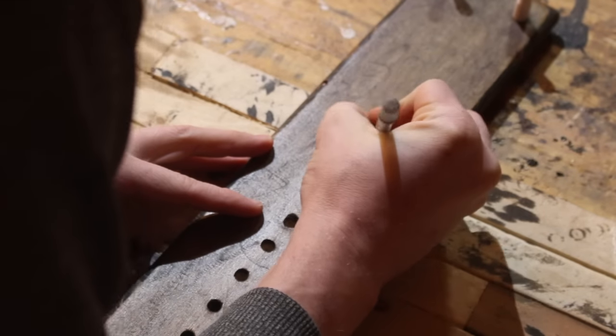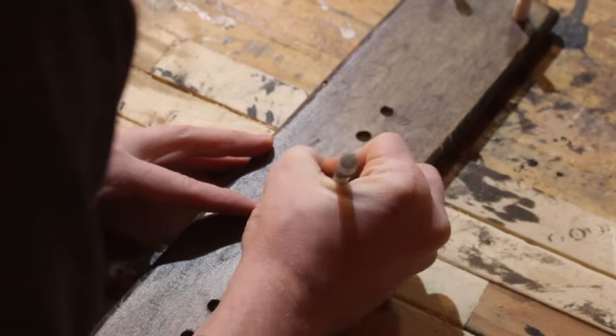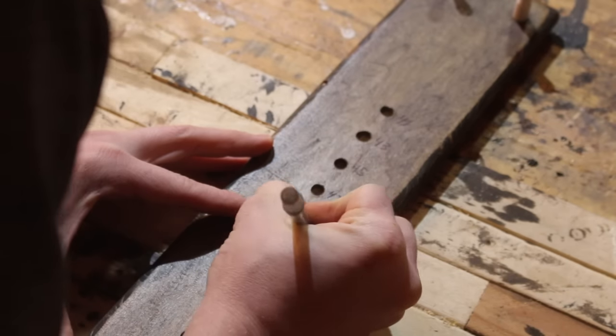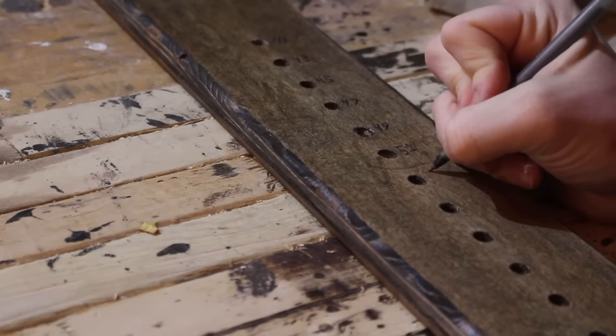And if the length of bowstring you need does not fall exactly where one of these dowel holes is it's no problem at all. It's extremely easy to remedy so I'm going to show you that here in a minute.